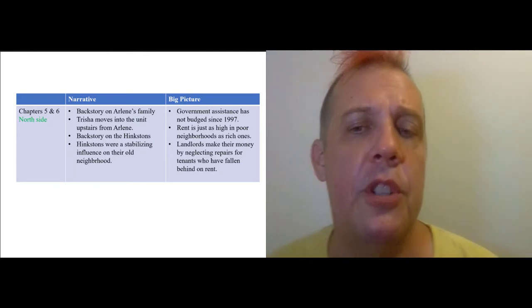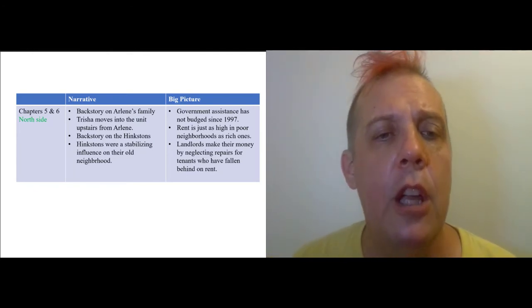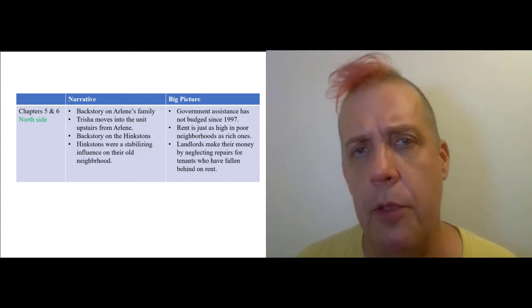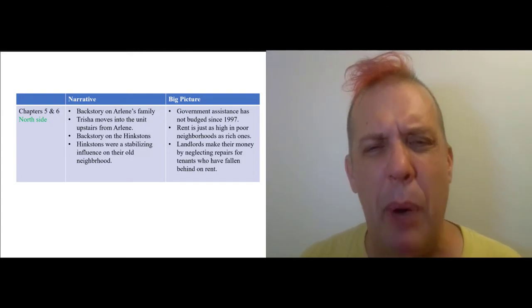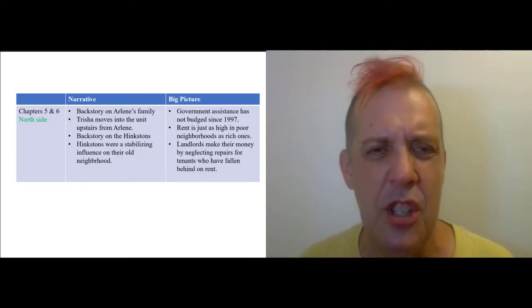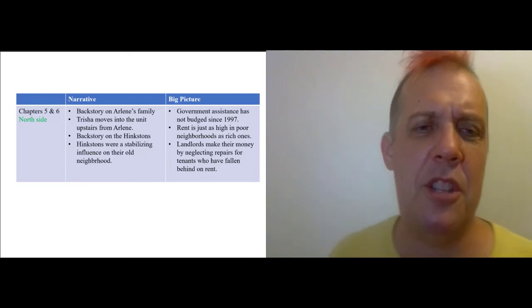Alright, so now we move to chapters 5 and 6, which is the end of the reading for today. We get more backstory on Arlene's family. We also see a woman named Tricia move into the unit upstairs from Arlene. Tricia is a former homeless crack addict. She used to sleep with men just to have a place to sleep. She bonds really quickly with Arlene by lying for her to a previous resident. But it's not even clear that she realizes what she's doing is lying. She just makes up a relationship, and she may even believe it.